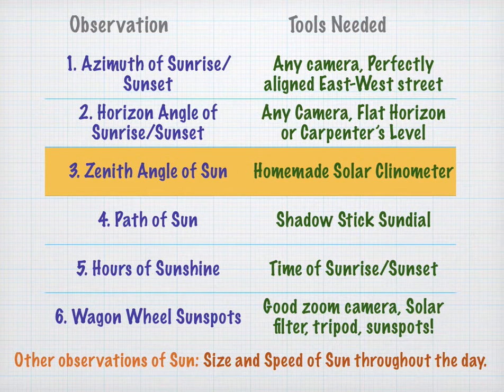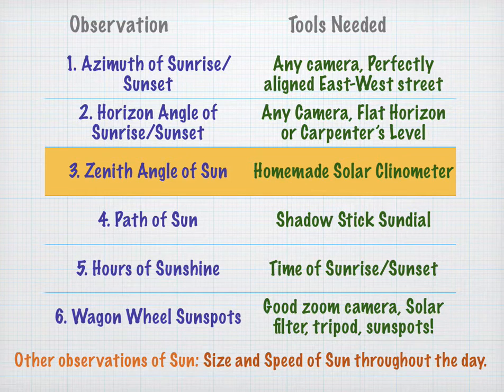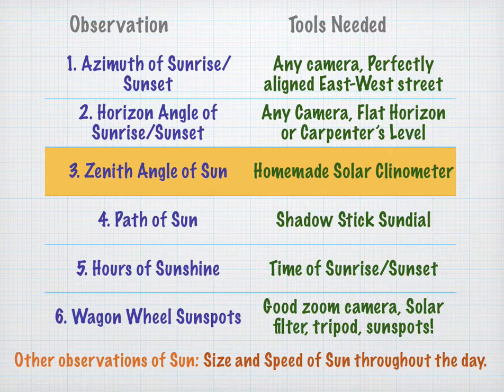This is the third video of our sixth video series, and in this video we're going to measure the height of the sun, the angle of elevation of the sun, at its highest point in the sky, or zenith, and we're going to build a solar clinometer.